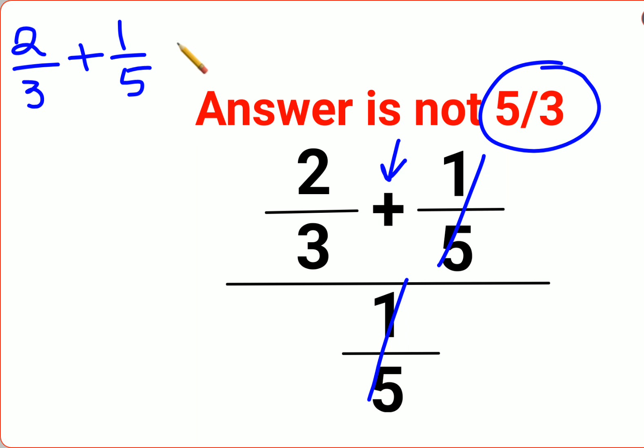Now if you look closely, you cannot directly add the numerators, or rather 2 plus 1, in this fraction because the denominators are not the same. So you need to make the denominators equal. For that, I need to multiply this with 5 and this with 3.